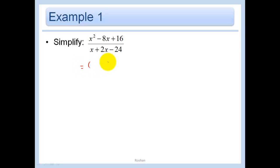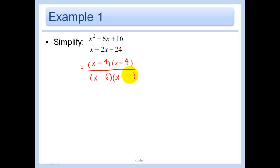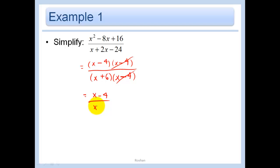Let's try to factor the top and then the bottom separately. To factor the top, we have X and X; what makes 16? A 4 and a 4, and we need a negative and a negative. On the bottom, we have X and X; what makes 24? A 6 and a 4, and we need a plus and a minus. Now we have this times this over this times this — I've gotten rid of the plus signs connecting my terms. The only pluses and minuses are within the quantities, so now I can cross those out. I have X minus 4 over X plus 6.